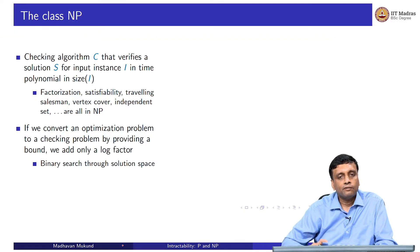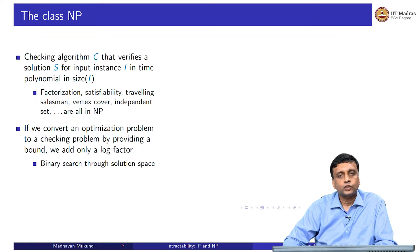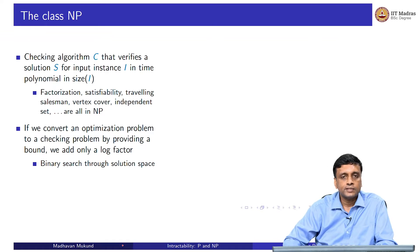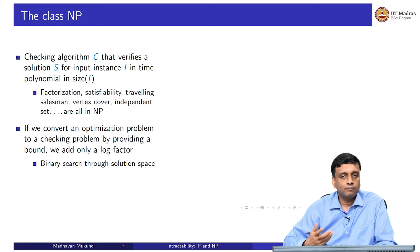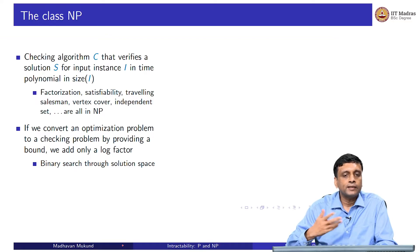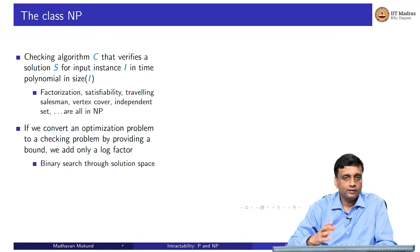When we take optimization problems like finding the shortest travelling salesman tour, or finding the maximum independent set or the minimum vertex cover, and we convert them to the budget version — which is a checkable problem — we can think of it as doing a logarithmic number of checks. So it is still checkable even in the optimization version if we just add a log step.